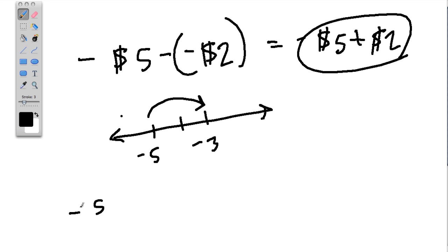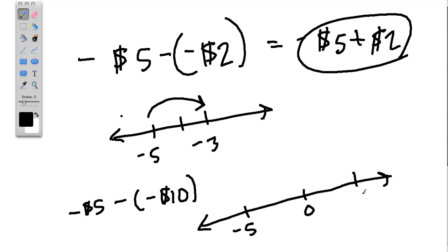And with the negative 5 dollars minus negative 10 dollars, I'm doing the same thing there. But now I'm hopping further. Here's negative 5. Here's 0. Well, I have to hop up 10 dollars, and that's how I know I get to 5.